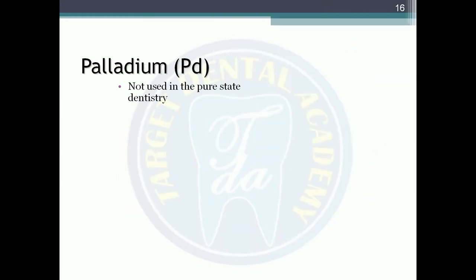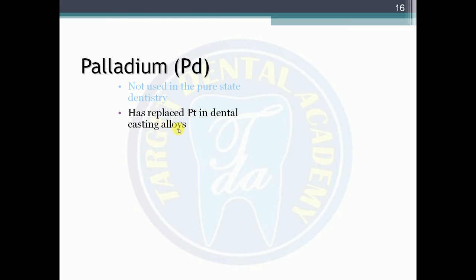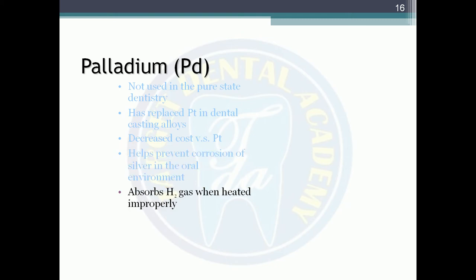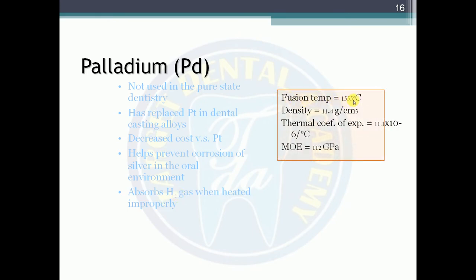Palladium is not used in pure state in dentistry but replaces platinum in dental casting alloys, decreasing cost while helping prevent corrosion of silver in the oral environment. An important property: palladium absorbs hydrogen gas when heated improperly. Fusing temperature: 1555°C; density: 11.4 g/cc; thermal coefficient of expansion: 11.1 × 10⁻⁶/°C; modulus of elasticity: 112 GPa.